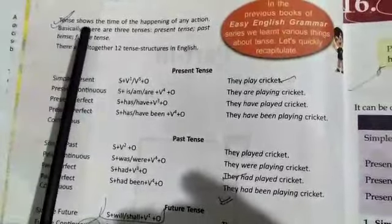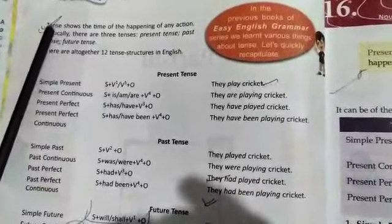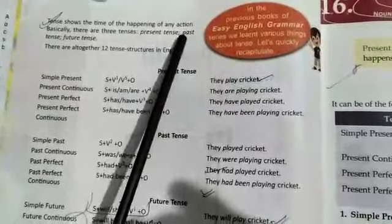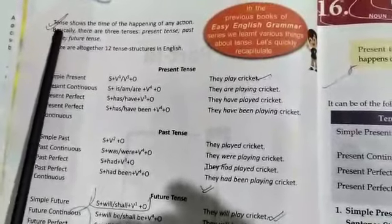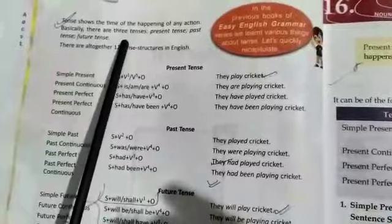Or students, we can call it in Hindi 'kal.' You have to study in English we can call it tense. So students, tense shows the time of the happening of any action and these tenses are basically three.